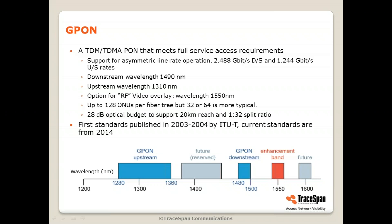G-PON was first standardized in 2003–2004. ITU is the body in charge of G-PON. The current standards are from 2014. There was a major overhaul in 2008 where some of the early specifications were deprecated and modified. Today's standard is more or less similar to that of 2008, though there have been some amendments and enhancements. We can see the different wavelengths: 1310 nm for upstream, 1490 nm for downstream, the 1550 nm analog RF overlay, and some bands specified as future when G-PON was standardized — today those have already been used for newer technologies.